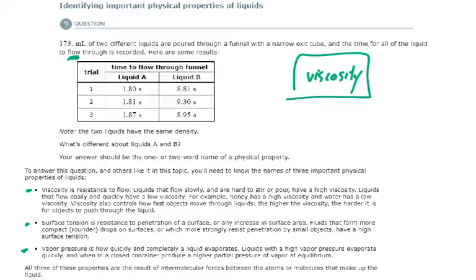And we should be able to see that liquid B is much more viscous than liquid A. Look at how much more time it needed to travel through the funnel than liquid A.